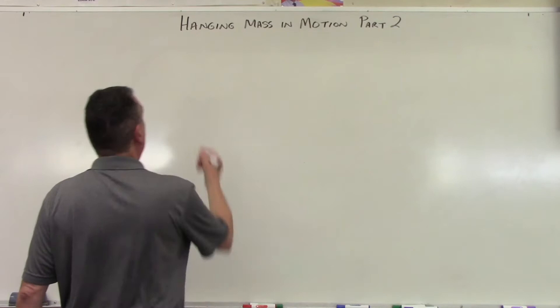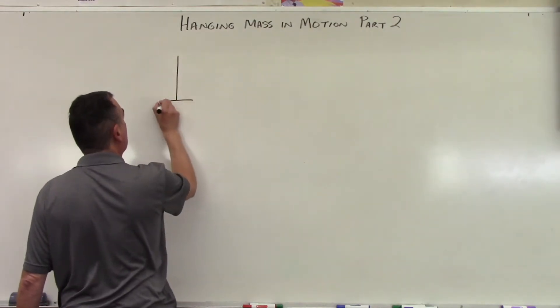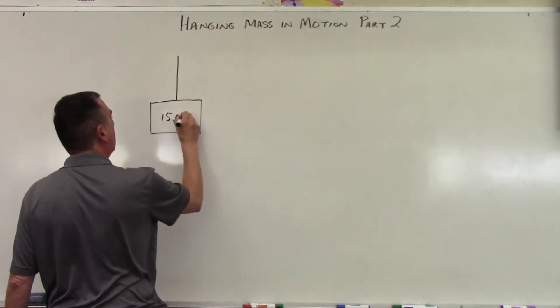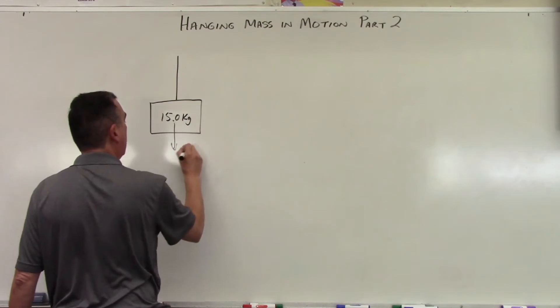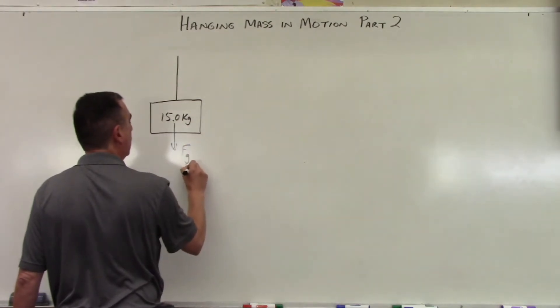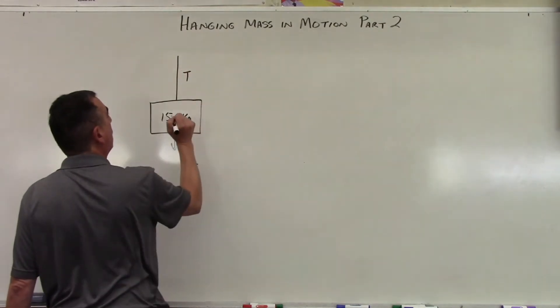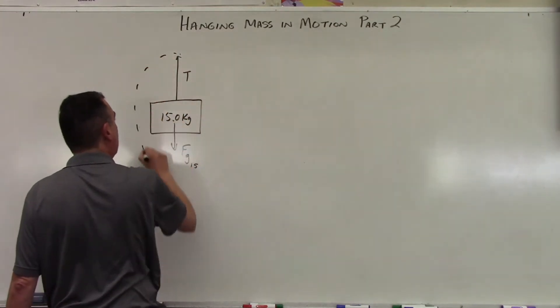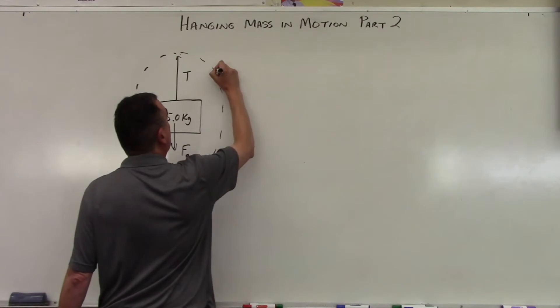To start, you're going to have a cord. And let's put an object below. I'm going to use 15.0 kilograms. At the center of mass, this is going to have, due to force of gravity, a force downward. I'll call it Fg sub 15. And then we'll have a tension that's upward. And in this case, this whole system is moving upward.